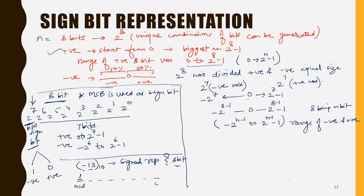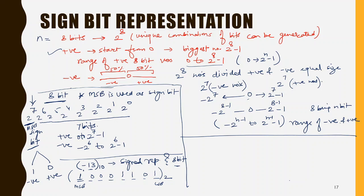This is the MSB and this is the LSB. Now, how is 13 converted into binary? The powers give us: 8 is there, 4 is there, and 1 is there — so 8+4+1=13 — and the remaining bits are all 0. So this is the signed representation of minus 13.